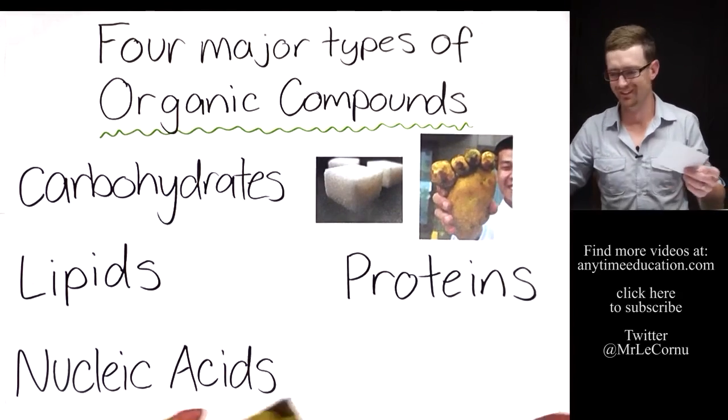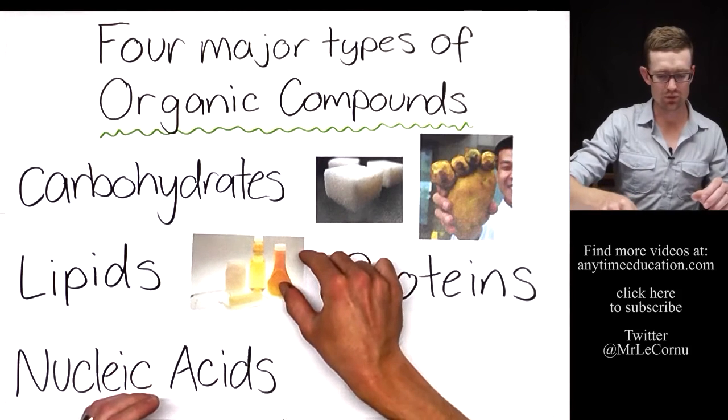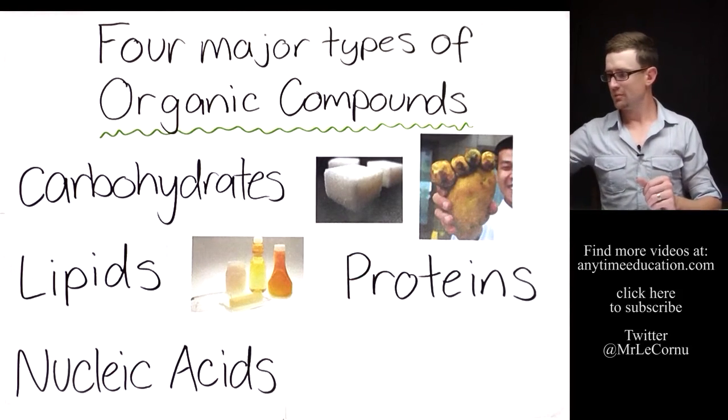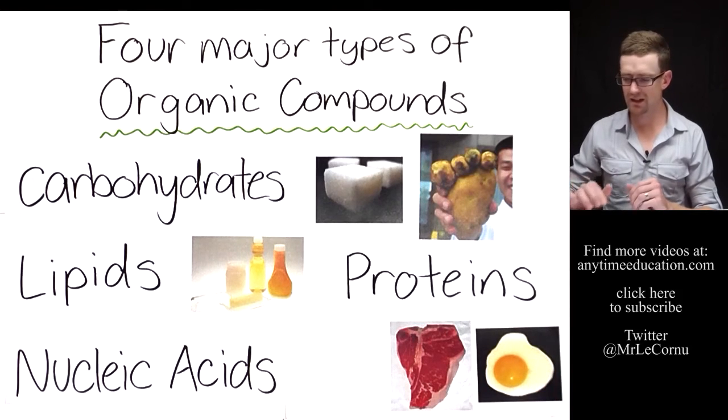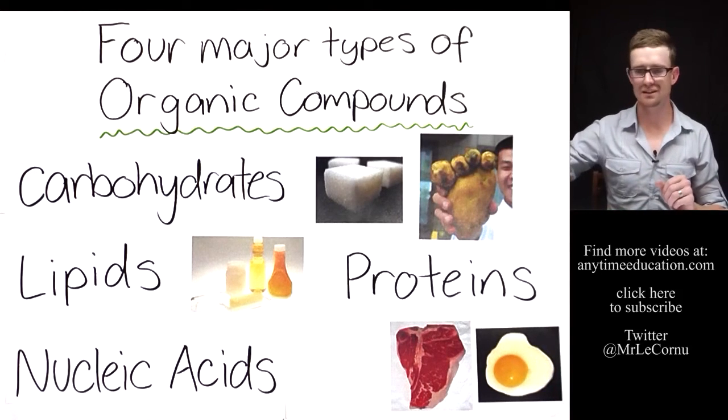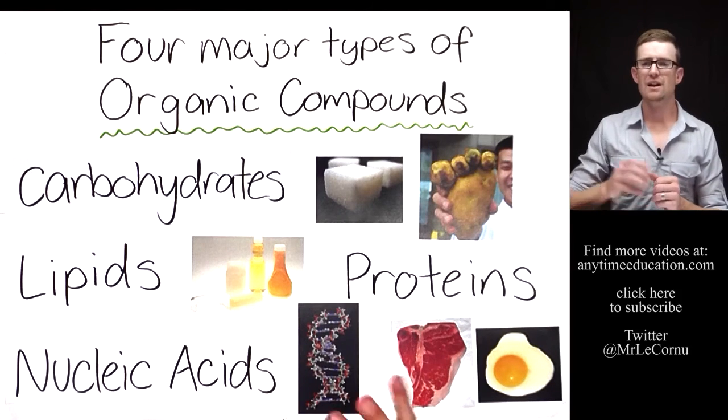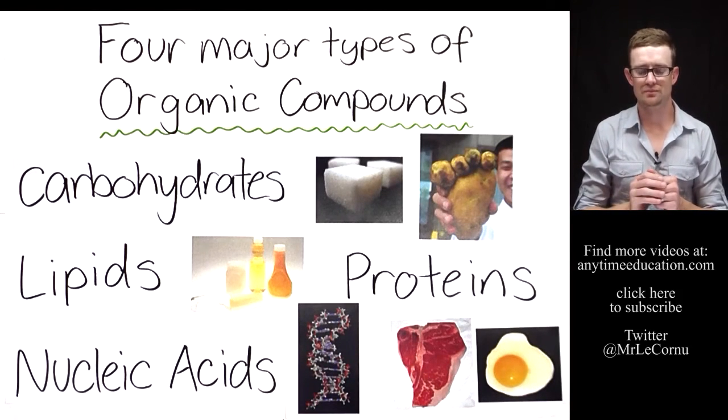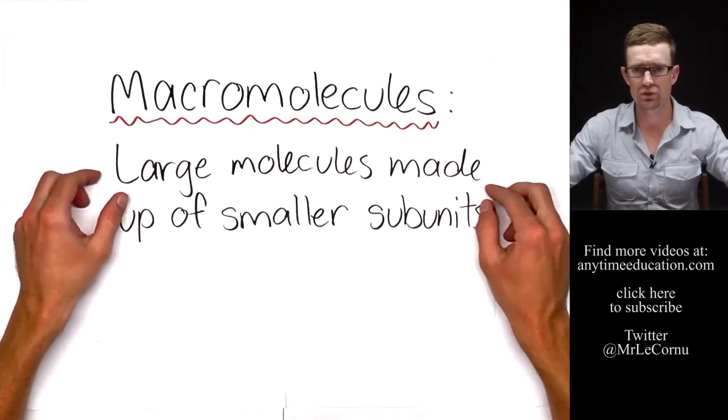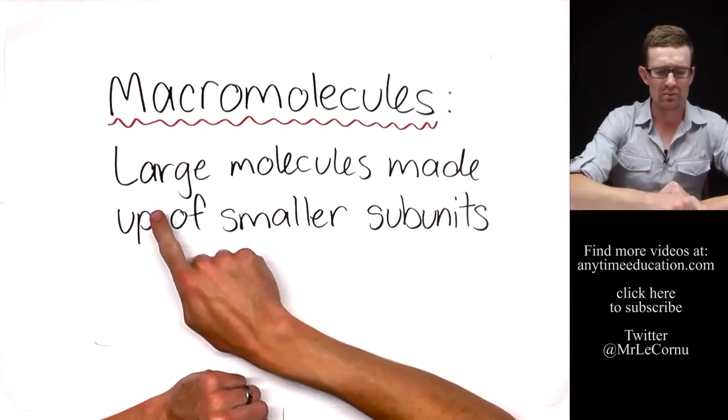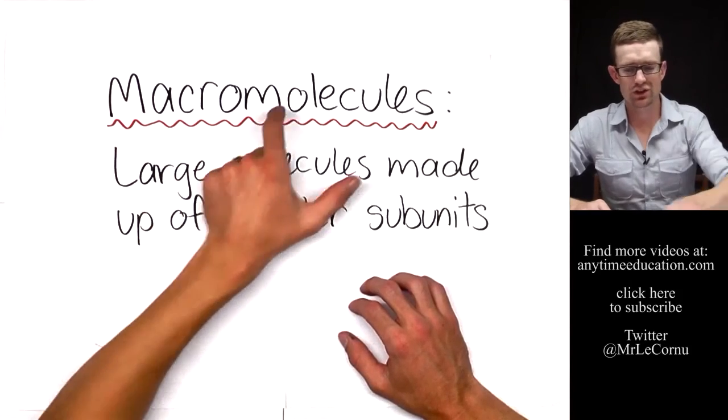Lipids: fats and oils are lipids. Proteins: meat contains proteins, eggs contain proteins. And nucleic acids: DNA and RNA are nucleic acids. These are the four major types of organic compounds. The name that we give to those four major types of organic compounds is macromolecules. The word macromolecules means large molecules made up of smaller subunits.